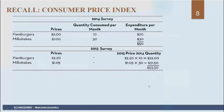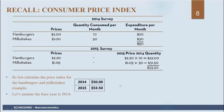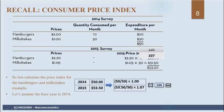In our hamburger and milkshake example, we have $50 in 2014 and $53.50 in 2015. To get an index, we first determine the base year — we'll use 2014. We do 50 divided by 50, so the base year equals 100. Then we take 53.50 divided by 50, multiply by 100, and that gives us the second number in our index.